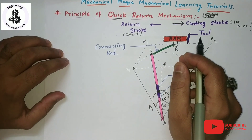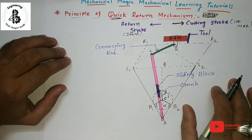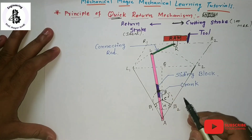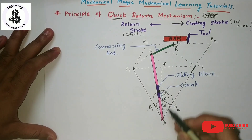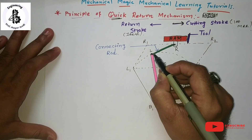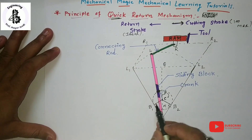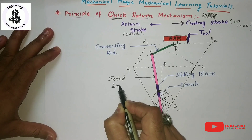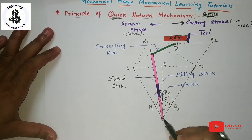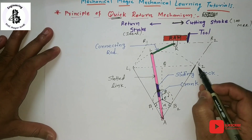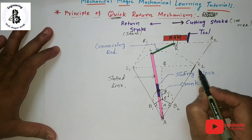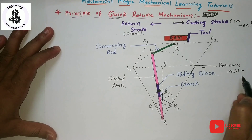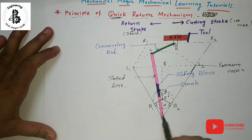In this figure we can see a slotted link represented as AL, where AL1 and AL2 are the extreme positions — the maximum limits of that slotted link. The link AL reciprocates between two points, L1 and L2.